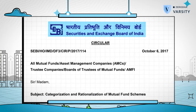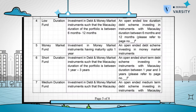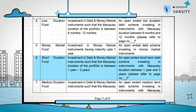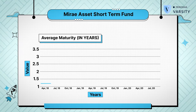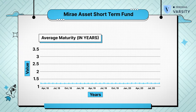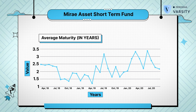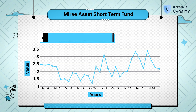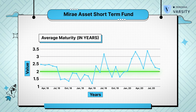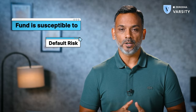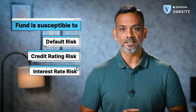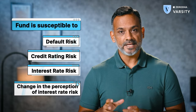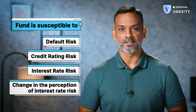You can always check the SEBI Circular to understand the definition of a fund. Have a look at the average maturity graph of this fund — I've sourced this from the AMC's website itself. The average maturity of the fund is roughly around 2 years, which means the fund is susceptible to default risk, credit risk, interest rate risk, and change in perception of interest rate risk.